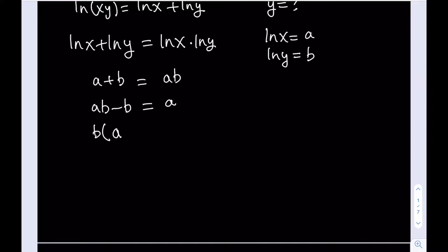b times the quantity (a minus 1) equals a. And then divide both sides by (a minus 1). And we get b equals a over (a minus 1).